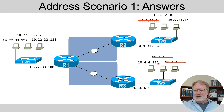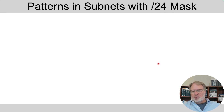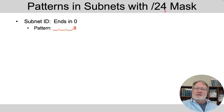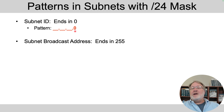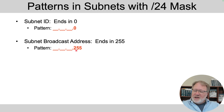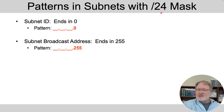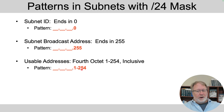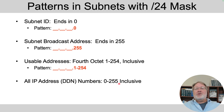Those are all the problems in this first scenario. To recap the rules for a slash 24 mask: the subnet ID ends in 0 — whatever the first three octet values are, the subnet ID ends in 0. The subnet broadcast address ends in 255. That applies to all subnets with a slash 24 mask. For usable addresses in the subnet, they have the same pattern in the first three octets, and then some number between 1 and 254 in the fourth octet. Remember to keep within the 0 to 255 range in any octet.